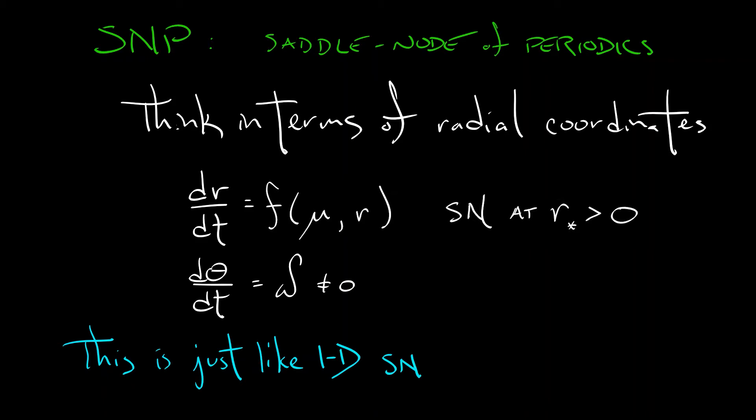This is just like a 1D saddle node. But here's the thing. You don't have to have it in these rigid radial coordinates where the limit cycles are circles. No, they could be any kind of shape you want. They could be all twisty and nonlinear, but the same sort of phenomenon where you have opposite stability limit cycles that collide into each other and disappear from existence. That's a saddle node.